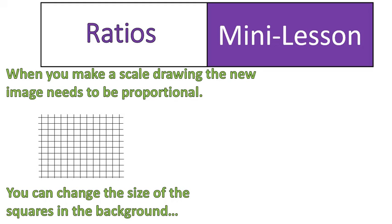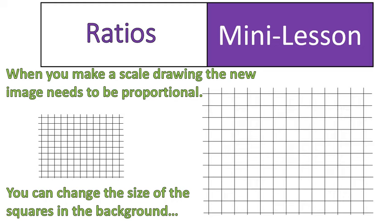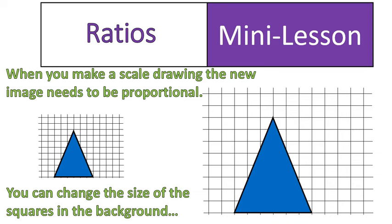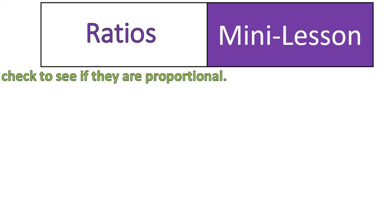One, you can change the size of the squares in the background. So you'll see from this first image, I've now doubled the length and width of the squares, so now four squares will fit inside of one. If I draw a triangle on the first set of squares, and then I draw one on the second set there, you can see that they are proportional because the triangles both go 1, 2, 3, 4, 5, 6 along the bottom, and then they're both 1, 2, 3, 4, 5, 6, 7, 8 squares tall. Because we changed the size of the squares.